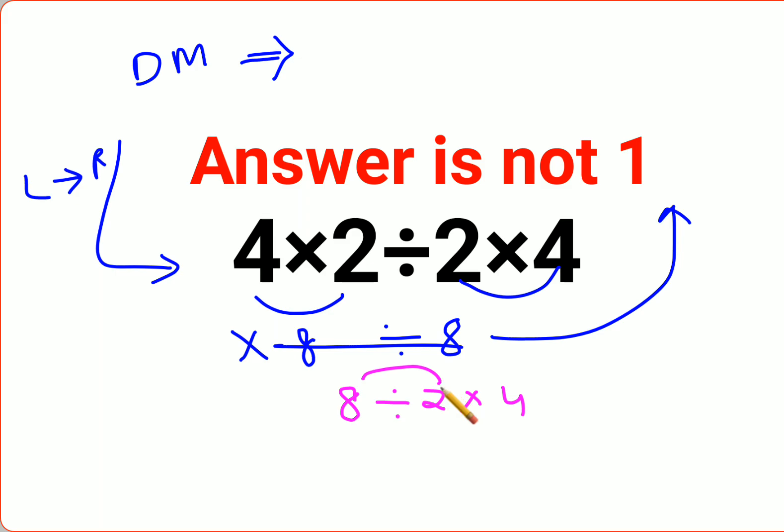From the left hand side the first operation happening is 8 divided by 2. So that gets you 4 into 4. So the answer for this question is supposed to be 16.